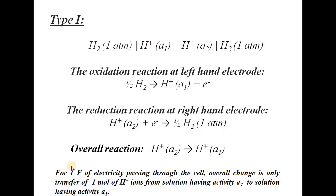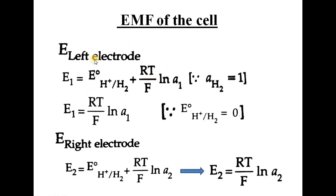Adding both reactions, we get the overall reaction where H⁺ of activity A2 moves to H⁺ of activity A1. On passage of one faraday of electricity, there is overall transfer of one mole of hydrogen ion from the solution of activity A2 to the solution of activity A1. The electrode potential at the left hand side is obtained by applying the Nernst equation to the oxidation half cell reaction, giving E = E° + RT/NF · ln(A1).